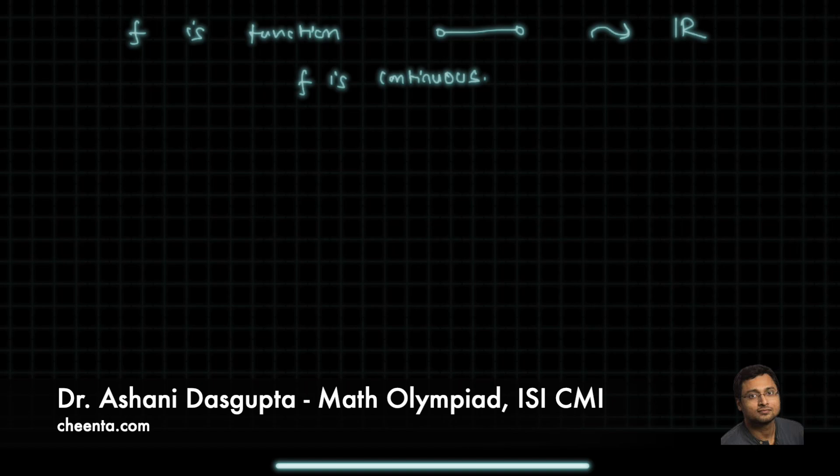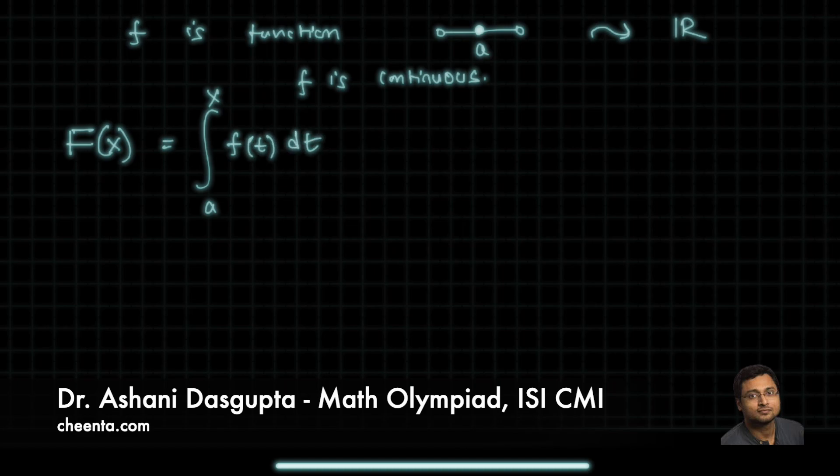So, if a is a point in this open interval, then we can define a function F of x as an integral from a to x f of t dt. That is, for each value of x, we can compute this integral, and that would be the value of capital F of x.